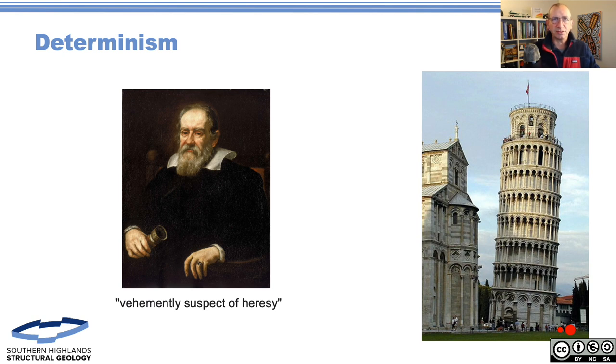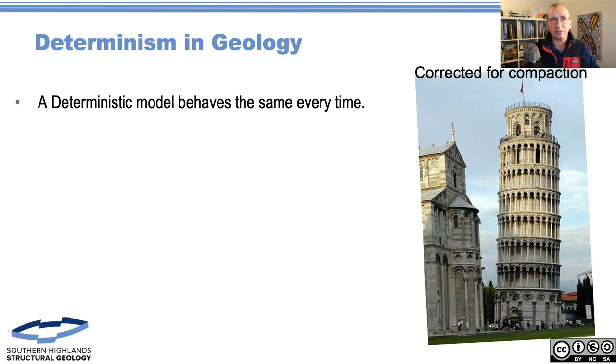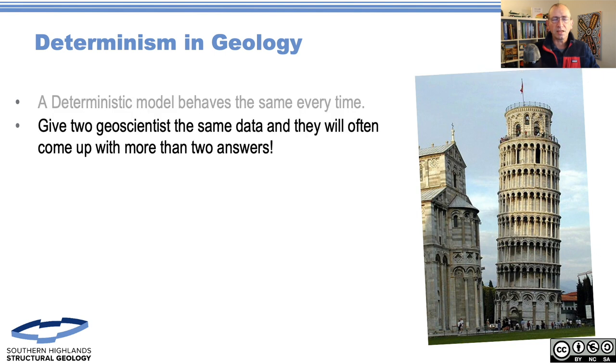This got him in a bit of hot water and his mother would say he was a very naughty boy. But what's useful is we can recreate this experiment. If we went back to Pisa today and corrected for compaction and continued tilt of the tower, we'd get the same results. A deterministic model is just that - you can repeat it and it will produce the same results each time.